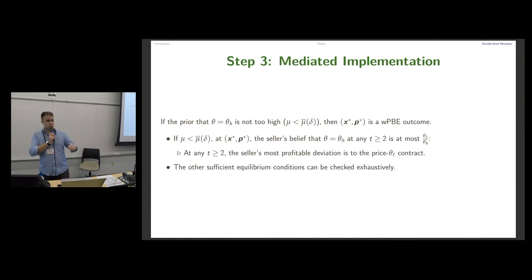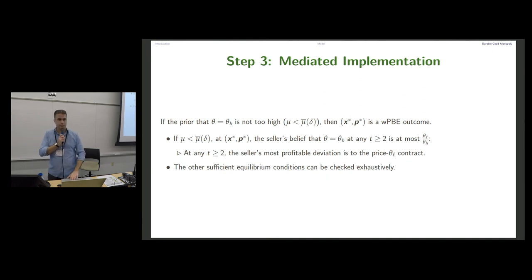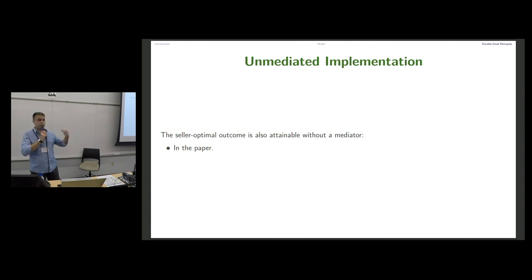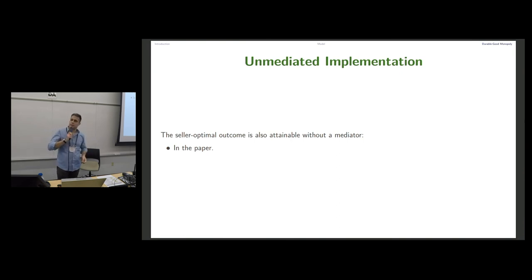The rest of the paper involves a third step on mediated implementation, showing this is indeed an equilibrium — or an approximate equilibrium when the prior on the high type is high and delta goes to one. We also discuss unmediated implementation: we show that a mediator is not needed to reach the seller-optimal equilibrium outcome; it can be reached with smart contracts. Thank you.